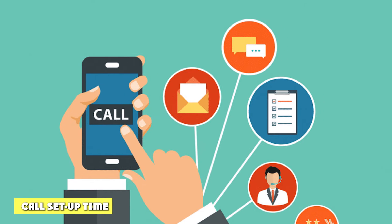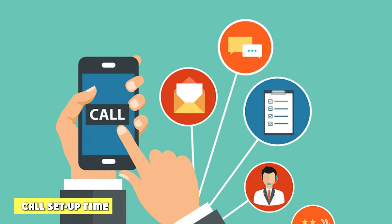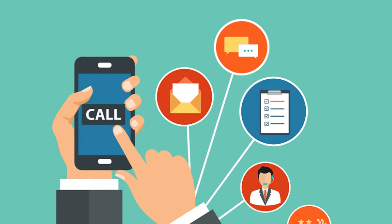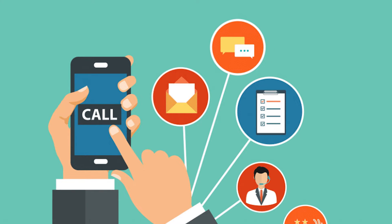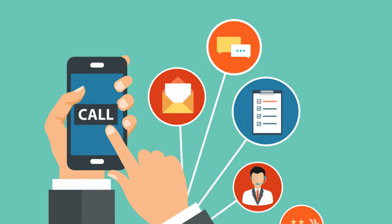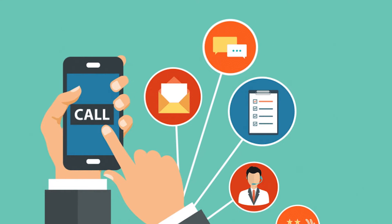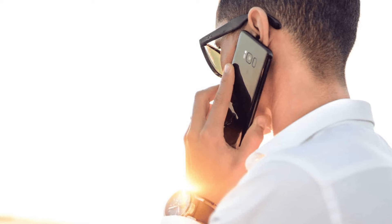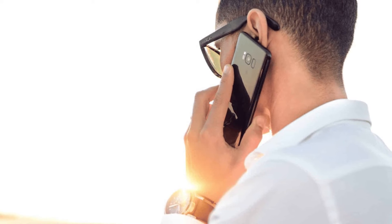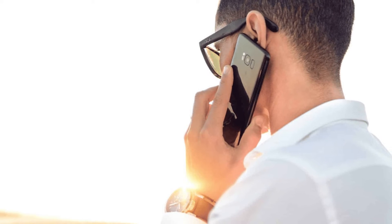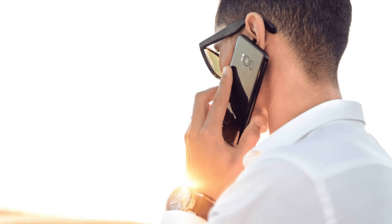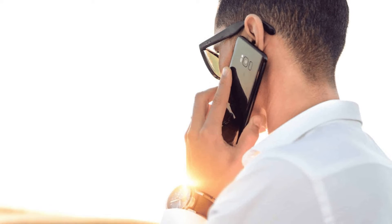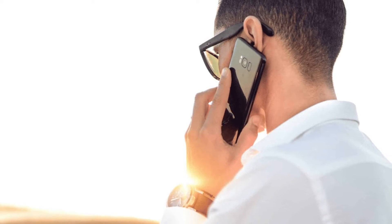Call Setup Time: It takes approximately 7 seconds to connect a call on 3G networks. The connecting time reduces significantly if both users are connected via VoLTE — if both are on VoLTE, it's only a matter of seconds.